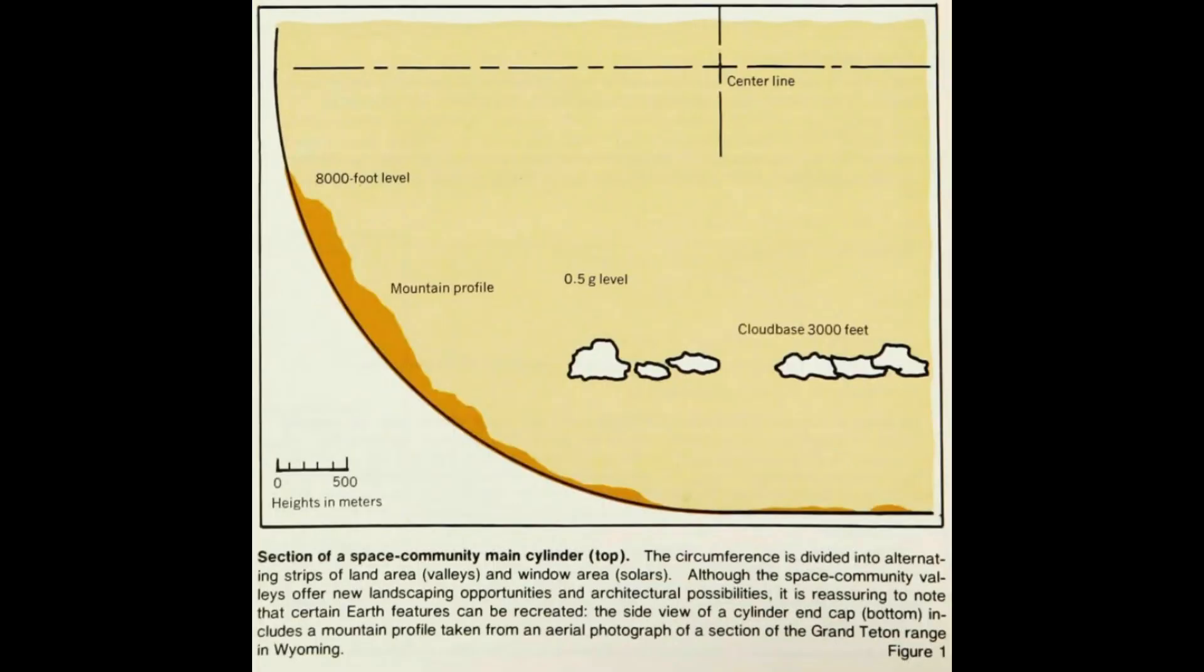Another section view of an O'Neill cylinder this time from the side at one of the end caps. This one shows how you could build mountains on the end cap. It might be kind of strange to hike up these though because the closer you got to the top towards the center axis of rotation you would get lower and lower gravity.